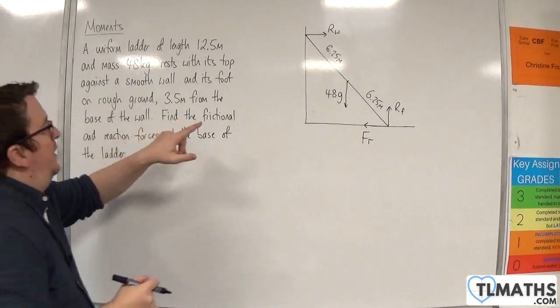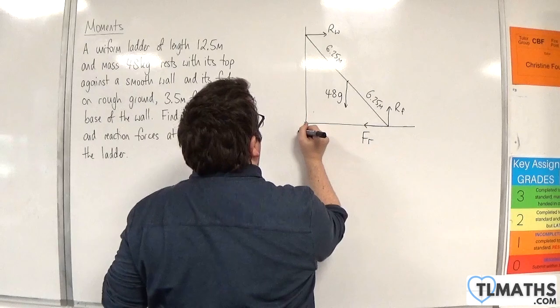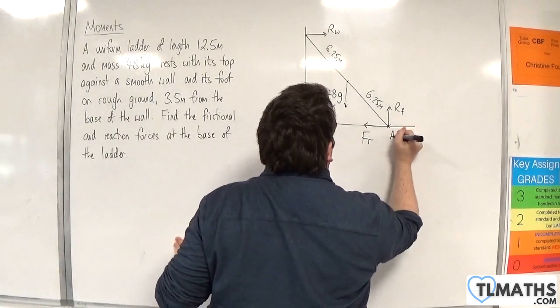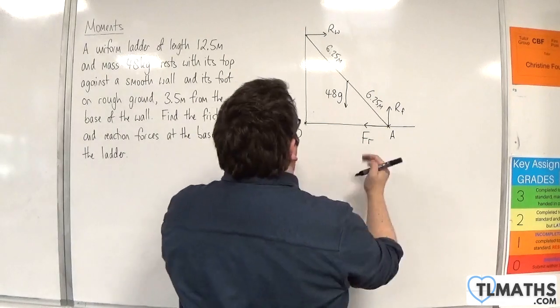Now that distance from here, so let's call that O, and this distance to that point, let's call that A, and that is 3.5 meters.